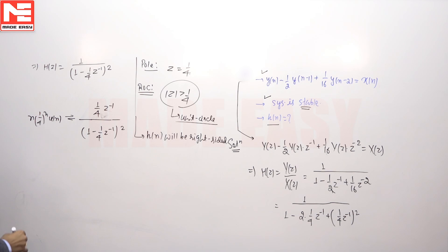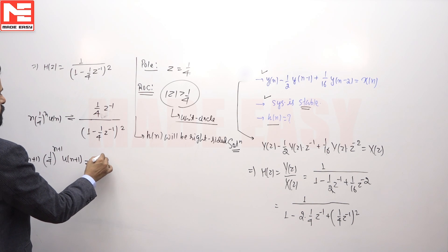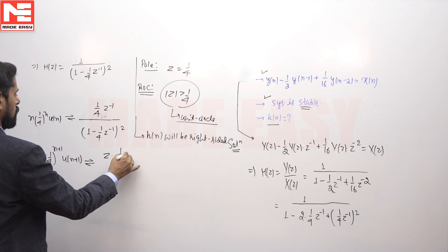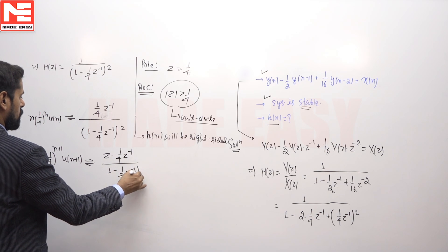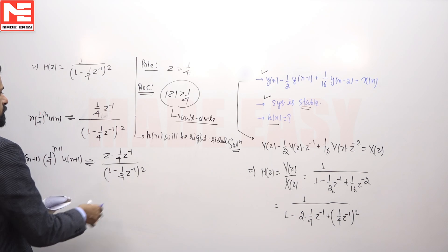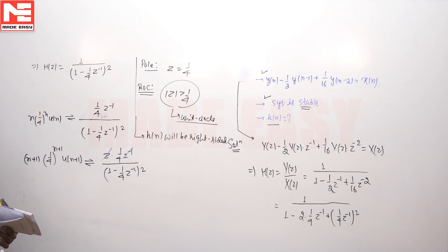If we replace variable n with n plus 1, then (n plus 1) times (1/4) to the power (n plus 1) times u(n plus 1). If we replace variable n with new variable n plus 1, we will multiply z in the transform. If we multiply z in the transform, then these two terms will be cancelled out.